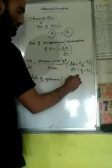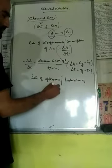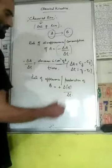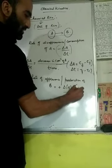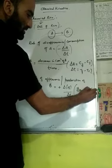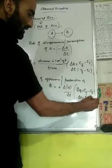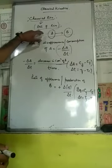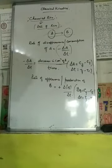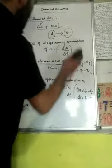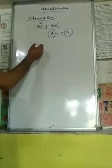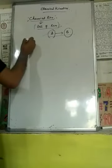For B, we write delta B divided by delta T. Delta B is C-final minus C-initial, and delta T is T-final minus T-initial. This represents the change in concentration of A and B with respect to time. Now I am going to explain this same reaction written in terms of concentration in a better way.